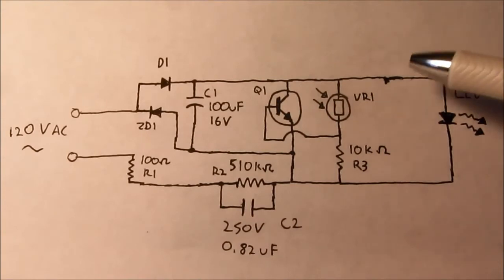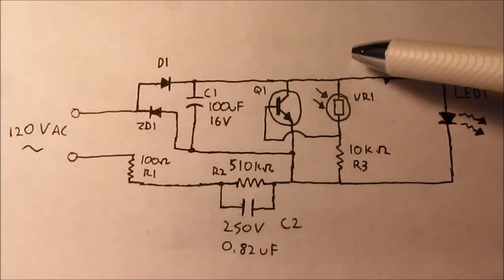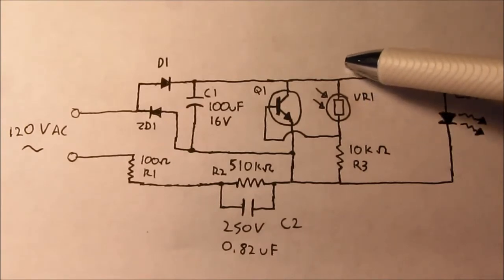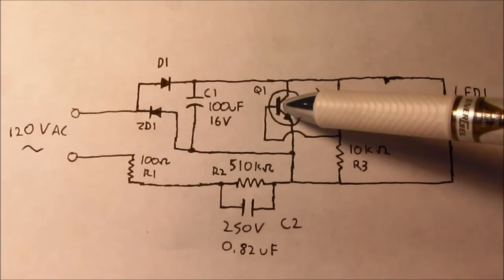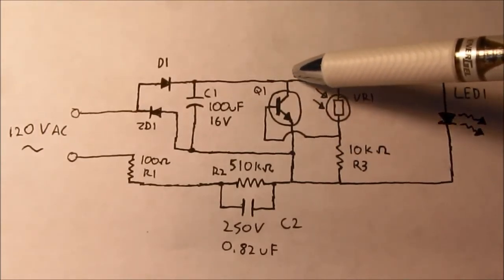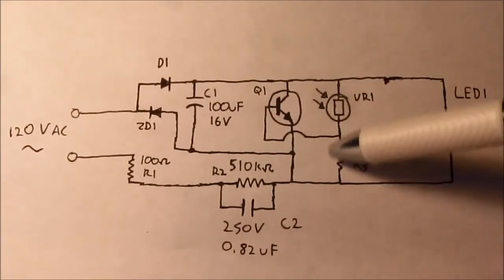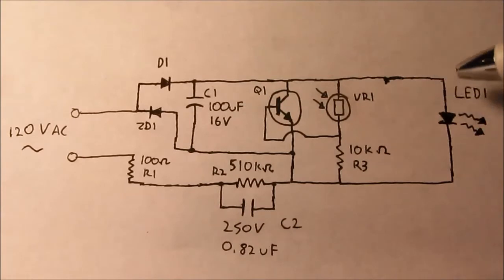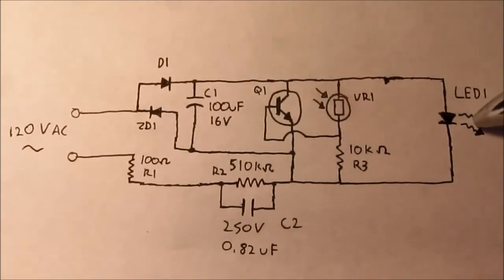When there's plenty of ambient light, the photoresistor has a very low resistance. This connects the positive rail to the base of Q1, turning it on. Since Q1 goes across the filter cap, across the LED, Q1 shunts all of the power to ground. The LED, therefore, is off because there's no voltage across it.